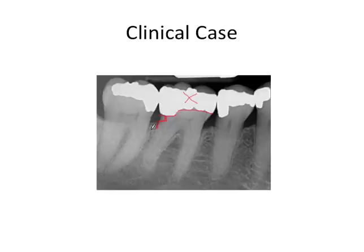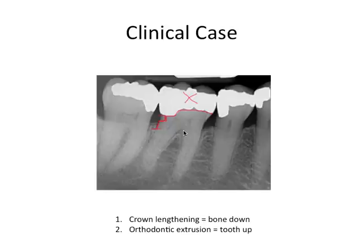Notice by this point we are way into bone, so what can we do? Is this tooth actually restorable? We can do clinical crown lengthening and move the bone down, or orthodontic extrusion and move the tooth up. If we cannot obtain ferrule and cannot stay away from biologic width without disrupting adjacent teeth, then this tooth would no longer be considered restorable.